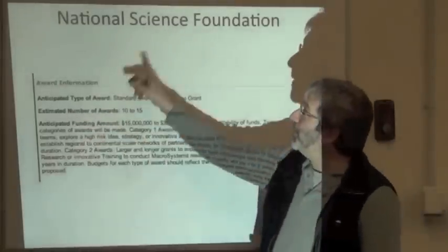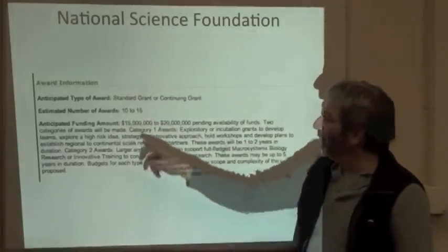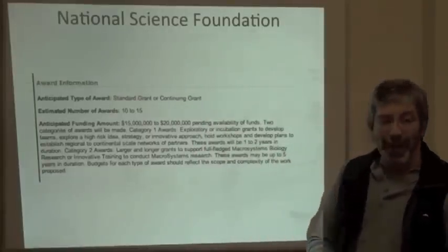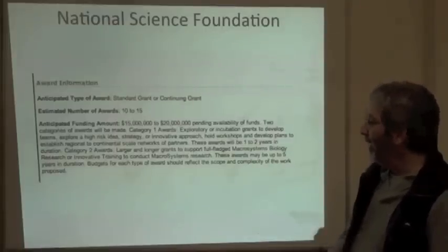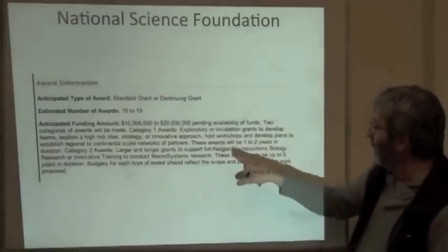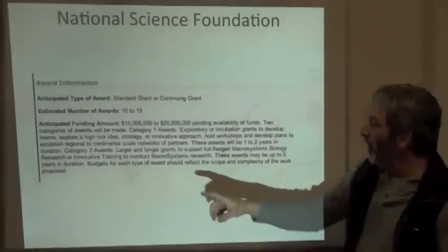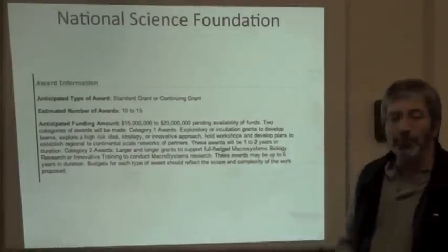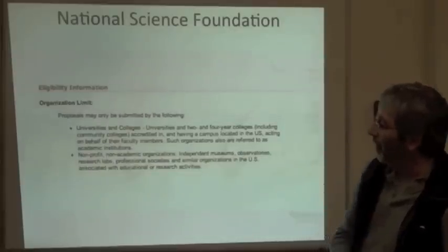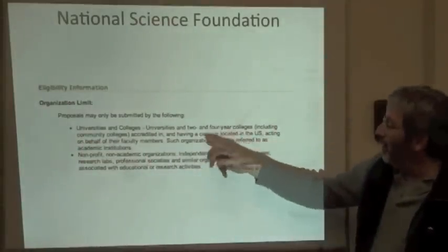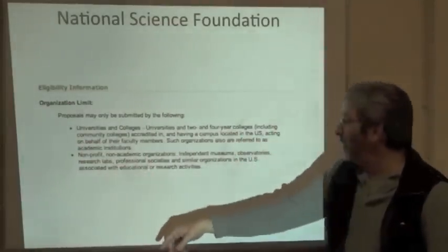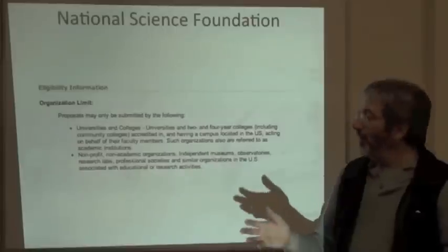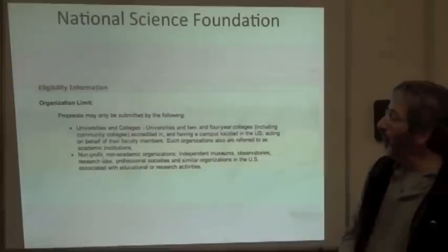Under award information, we get to the budget: they plan to give 10 to 15 grants for a total of 15 to 20 million dollars, pending availability of funds. Awards in the first category will be one to two years in duration, but in the second category awards can go up to five years. Under eligibility information — essentially who can apply — it lists universities, non-profits, and independent museums. Make sure you're on that list; don't fit a square peg in a round hole, because it will end up wasting your time.